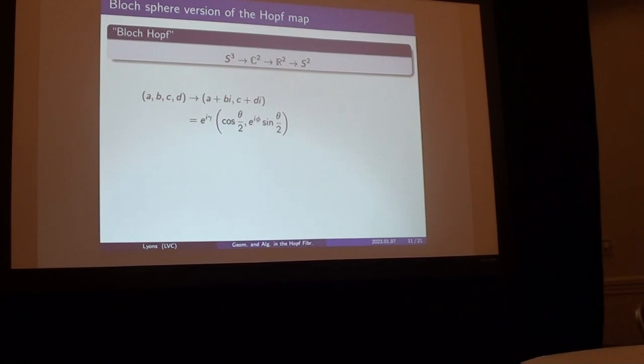There's a rotation of the complex number. And then out here there's a global phase, the physicists say phase, or e to the i, real number. So these are all real numbers. The gamma, theta, phi are all real numbers.